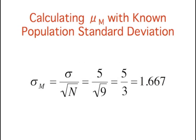Next, we determine the standard error. Substituting the standard deviation of 5 and n of 9 into the equation, the standard error is calculated to be 1.667. Be careful not to confuse the n of 100 shown previously, which represents the number of pairs of pictures each subject saw, with the n of 9 shown here, which represents the number of subjects.